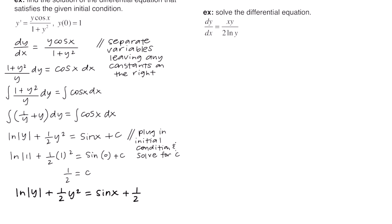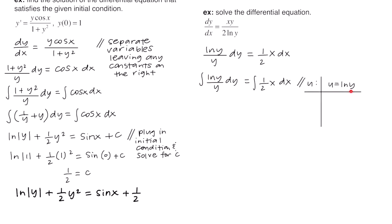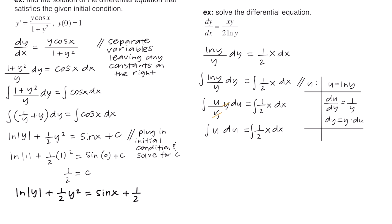This example says: solve the differential equation. We separate the variables, bringing y's with dy and 1/2 x with dx, giving (ln y)/y dy = (1/2)x dx. To integrate the left side, we let u = ln y, take the derivative with respect to y to get du = (1/y)dy, and rewrite as dy = y·du. Substituting in, the y's cancel, leaving just u·du, which integrates nicely.